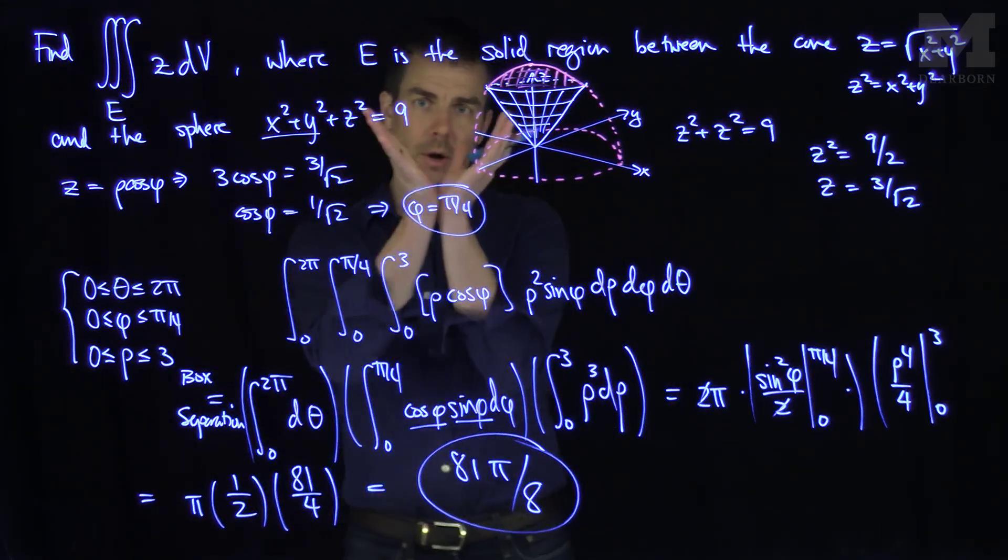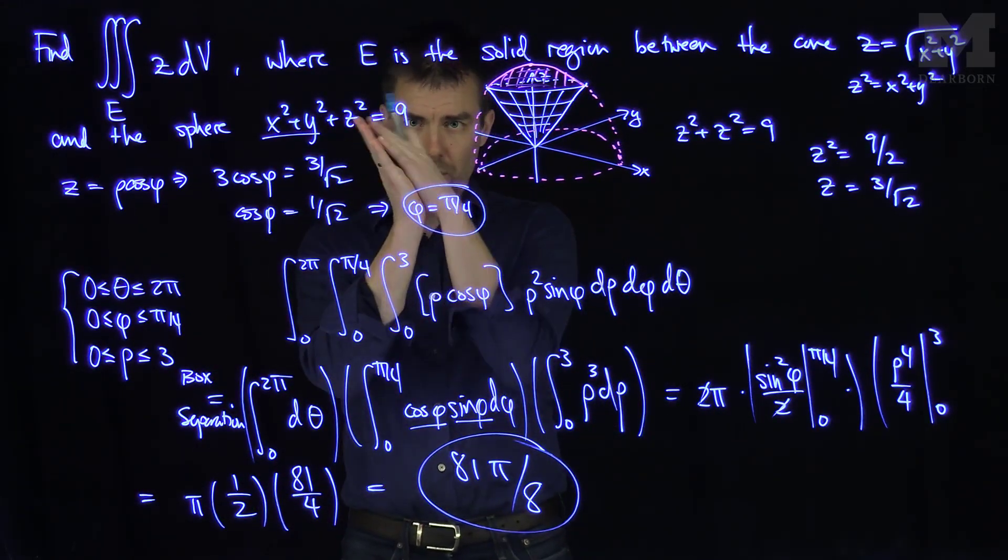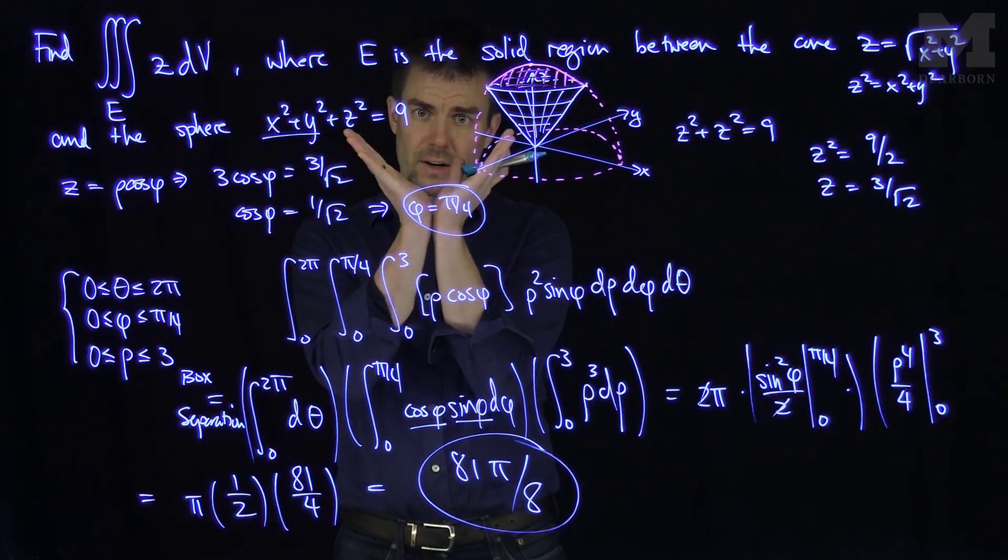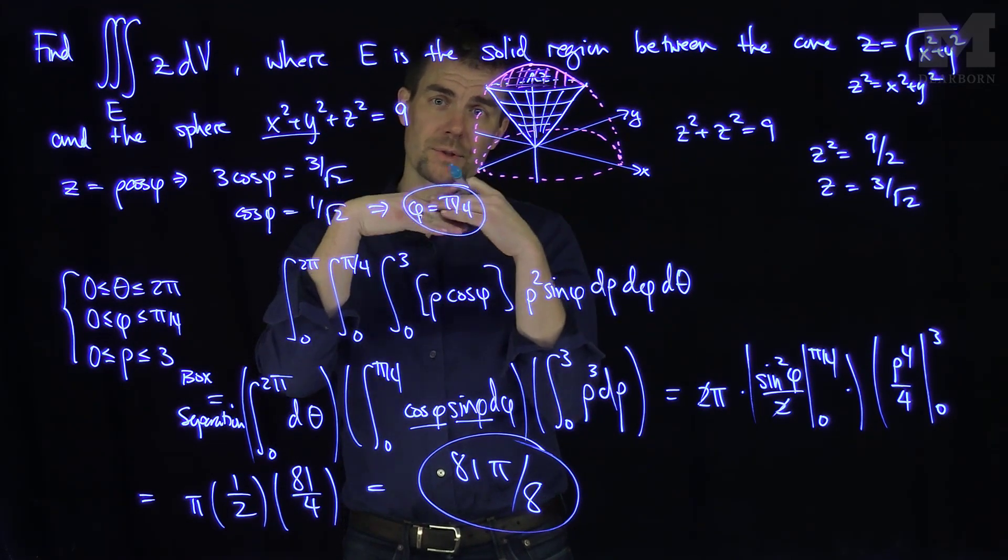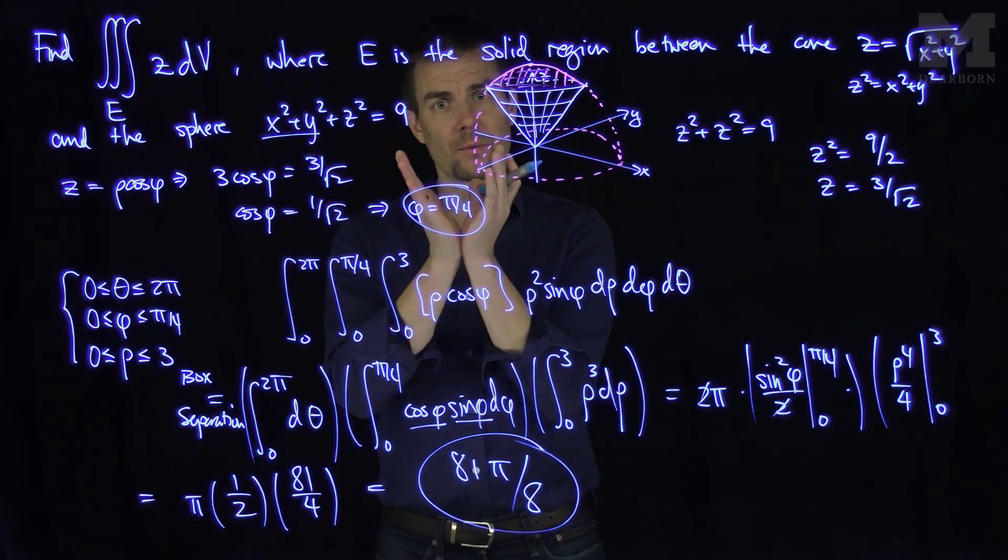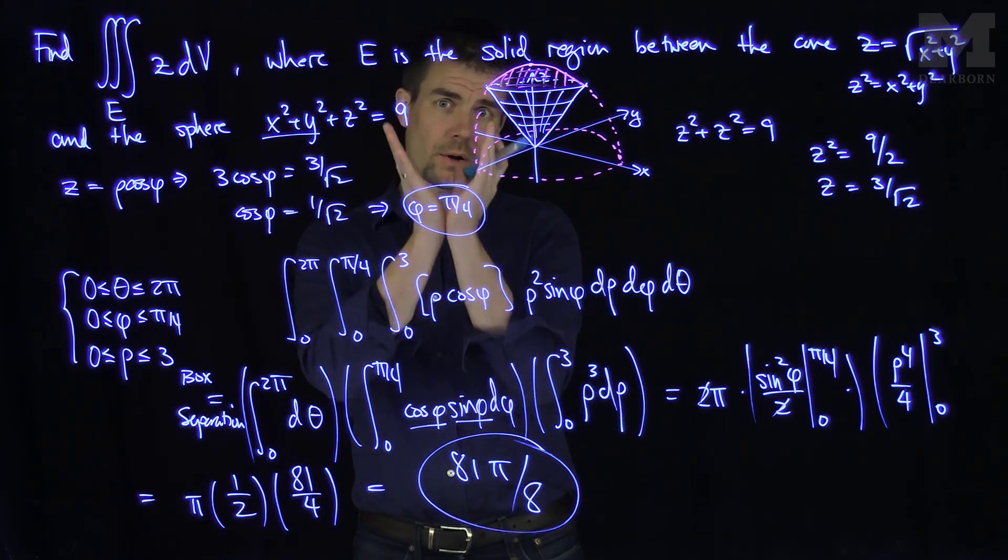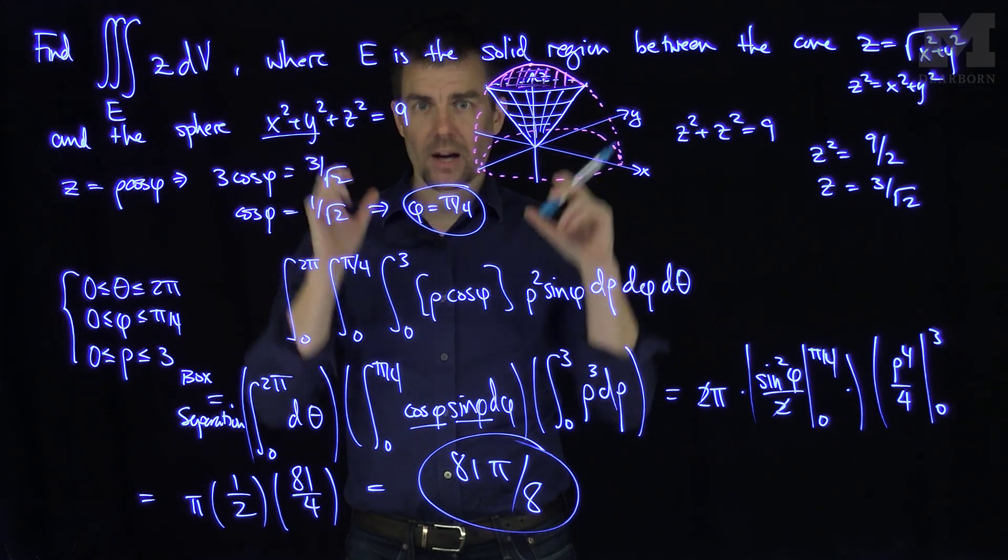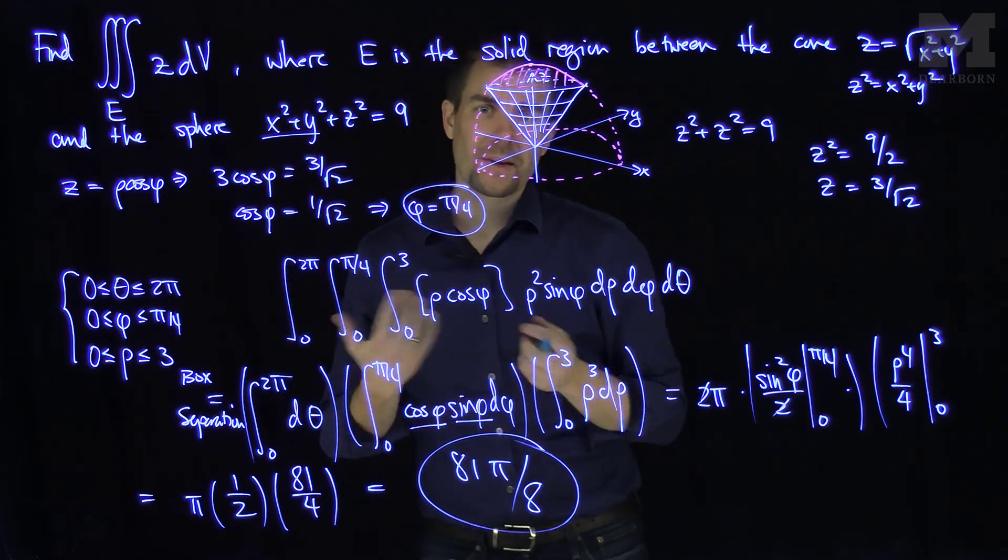We've noticed that since I had a cone, a cone cuts out a longitudinal angle of 45 degrees, which gives me a bound on my phi, and then the top cap was a sphere, so my rho went between 0 and 3. So this region, this region between a sphere and a cone, is a box-type region in spherical coordinates. Thank you very much.